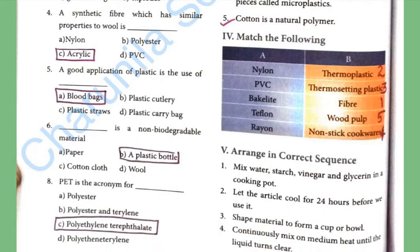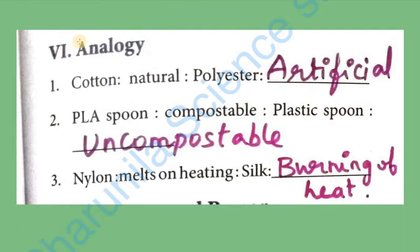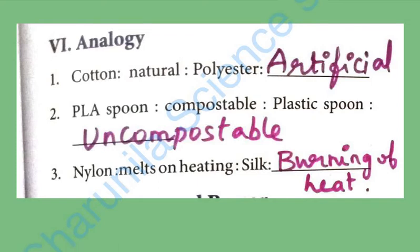True or false. A lot of plastic pollutes our environment — true. Refuse is the best way to manage plastic — true. Beer glass made up of synthetic fibres while cooking — false, cotton fibres are used while cooking. Degradable plastics break down into tiny pieces called microplastics — true. Cotton is a natural polymer. Match the following and analogy: cotton — natural; polyester — artificial; nylon — melts on heating; silk — burns on heating.